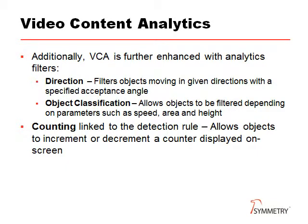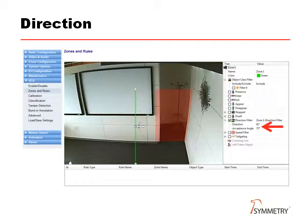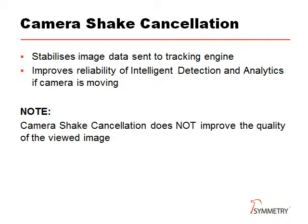VCA also allows us to further refine what we consider to be an alert by adding direction filters and object classification. Counting can also provide useful on-screen information. This is one of the configuration web pages in the camera, and we can see that we have added a green detection line to generate an alert if someone moves to the right, shown by the detection arrow, but will not generate an alert if they walk to the left. The direction is set with the mouse by dragging the central arrow to point in the appropriate direction. A feature called camera shake cancellation is designed to provide a more stable signal to increase the reliability of the analytics.